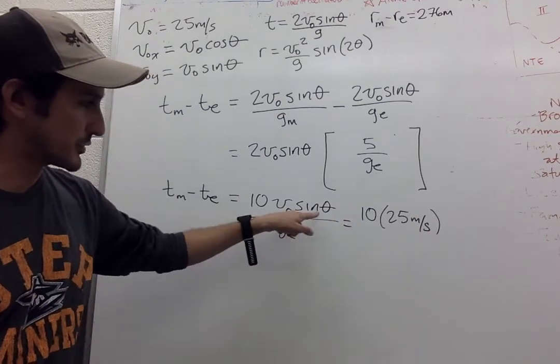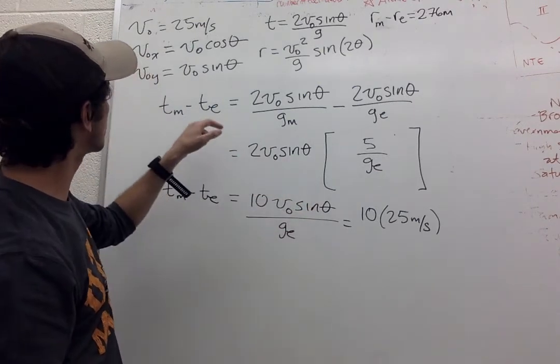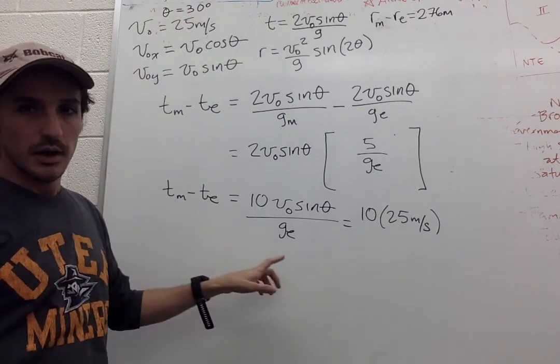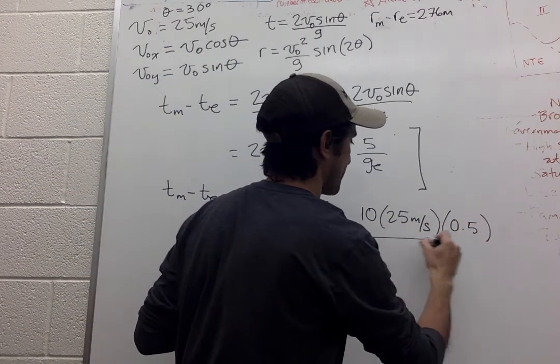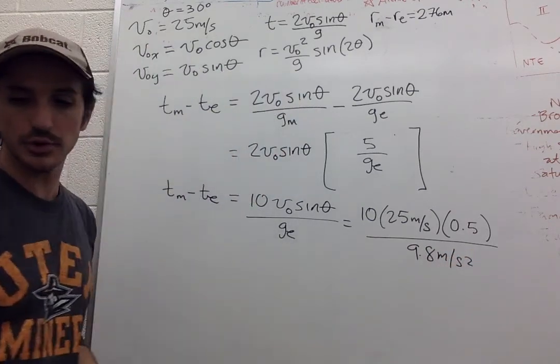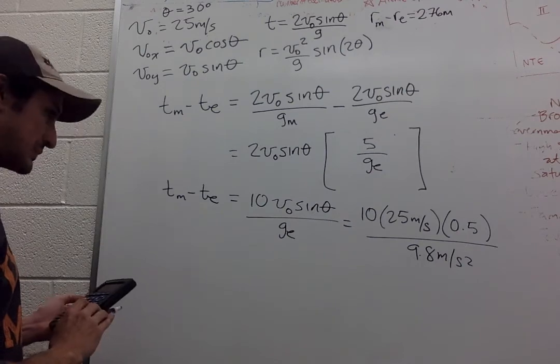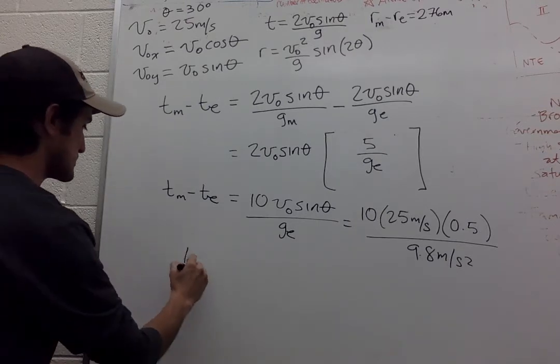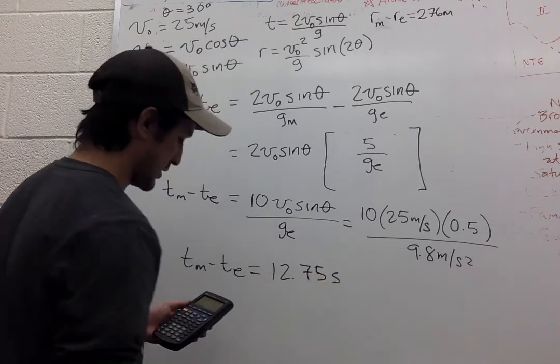So ten, twenty-five meters per second, sine of theta. That means sine of 30 degrees. Actually I'll put it over here. 0.5. Divided by 9.8 meters per second squared. I've got 12.75 seconds.